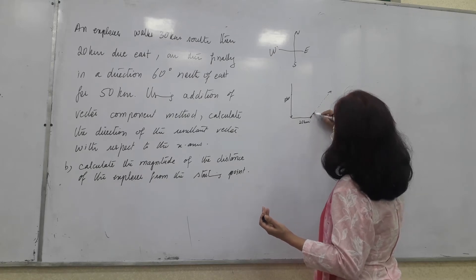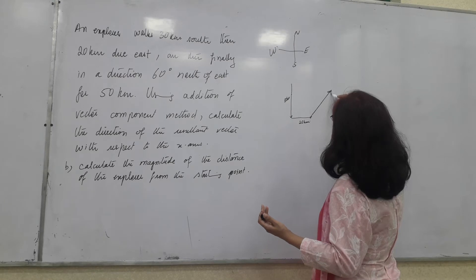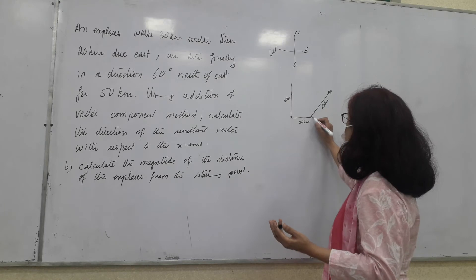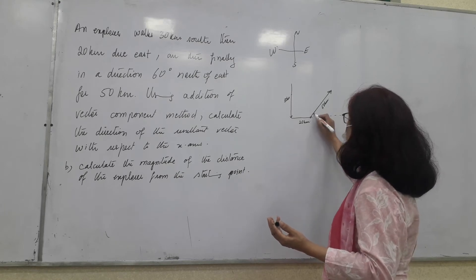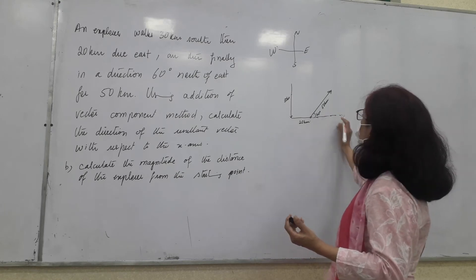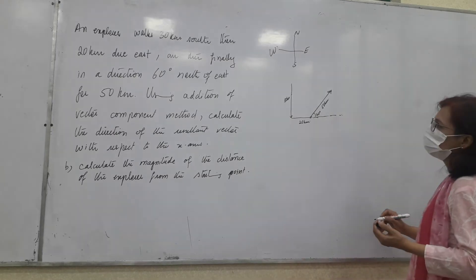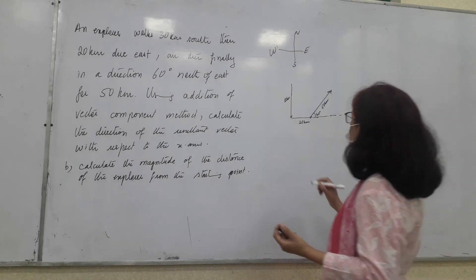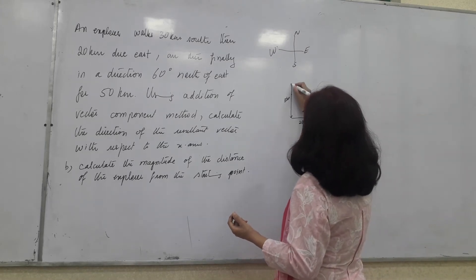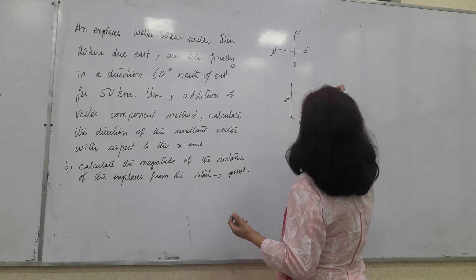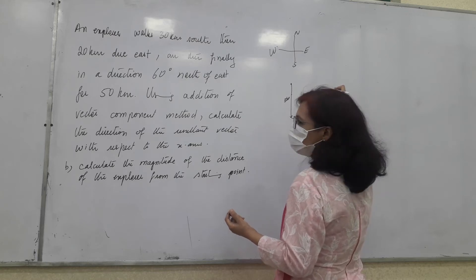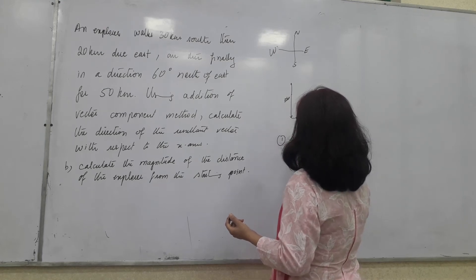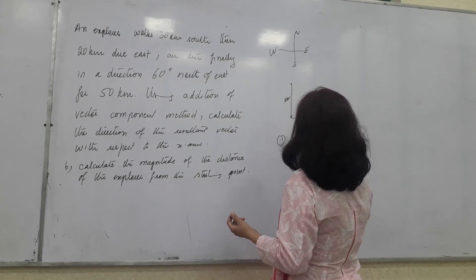So, we have, this represents 50 kilometers, 60 degrees with east. This is 60 degrees, right? Okay, fine. Now, head-to-tail rule we will use to join the initial position to the final position and that will be the result. So, that's the important concepts we have. Number one, draw the diagram. Draw the diagram.